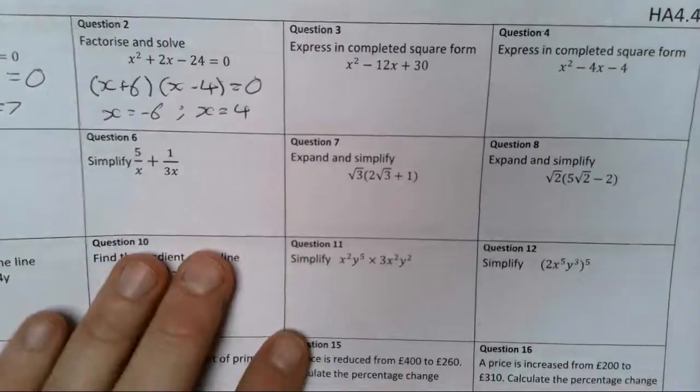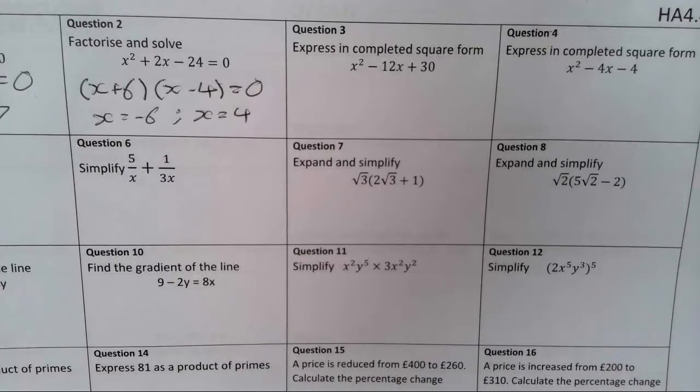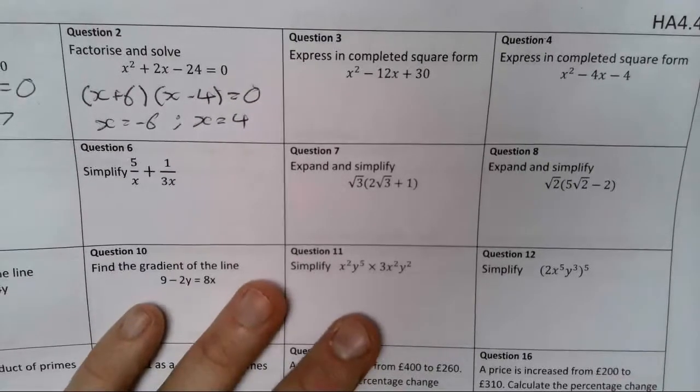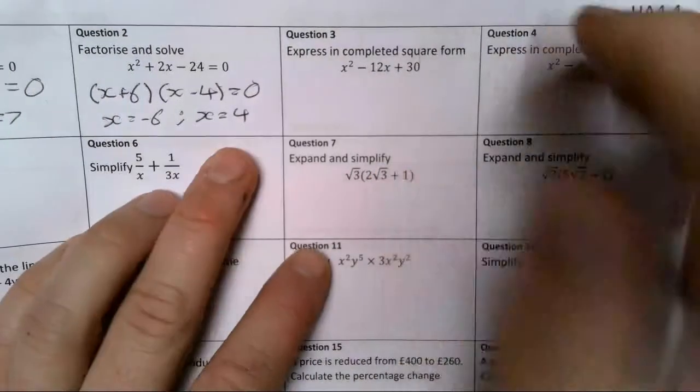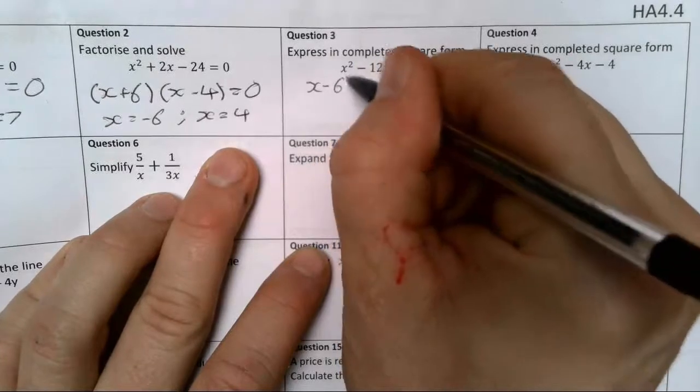Completed square form. Now we've done this a few weeks now, and we had a question to look at on this before. So completed square form, here's how it works. I'm going to halve this 12, so I've got x minus 6 squared.